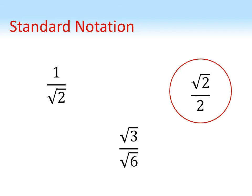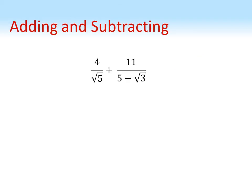But why is it standard to rationalize the denominator? One reason is it makes adding and subtracting of fractions a lot easier. Take this example: 4 over root 5 plus 11 over 5 minus root 3. Where to start on this? The denominators are completely different, they've both got surds in them—it's a bit of a difficult one.